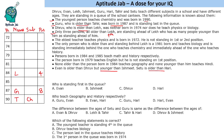The eldest teacher teaches physics and was born in 1972. The only person elder than and standing behind Lake is 1981-born and teaches biology — we'll come to this complex statement later. Persons born in 1984 and 1985 teach math and history respectively, so we fill those in. The person born in 1979 teaches English but is not standing in first position — we'll use that negative part for elimination later.